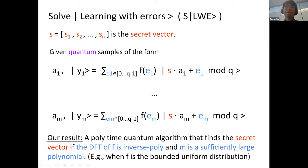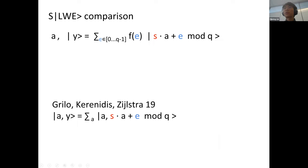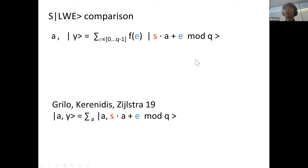Our result shows there is a polynomial-time quantum algorithm that finds the secret vector s if the DFT of f is inverse-polynomial and m is a sufficiently large polynomial. Also note that our quantum samples differ from those in prior work by Grilo, Kerenidis, and Sikora, where the error e is classical but a is a quantum state. In our case a is a classical fixed random vector and the error is in superposition — a different problem requiring different solutions.